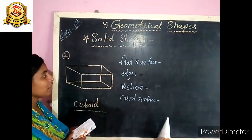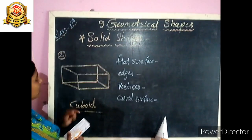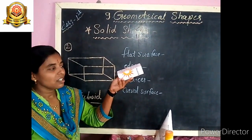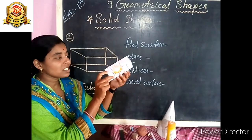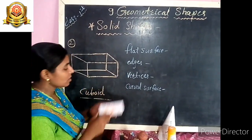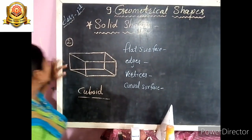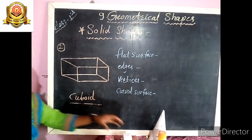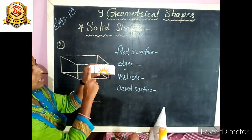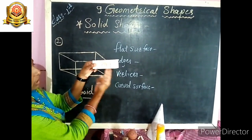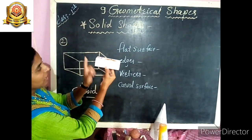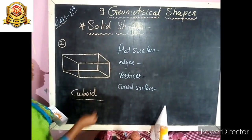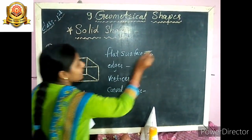Our next example is cuboid. Look at this — what is this? This is a box, and the shape of that box is cuboid. This cuboid has how many flat surfaces? 1, 2, 3, 4, 5, and 6 — there are 6 flat surfaces of cuboid.